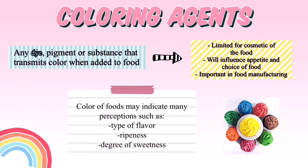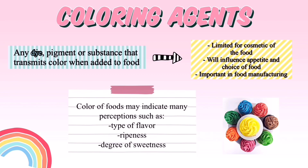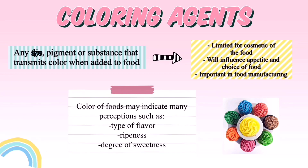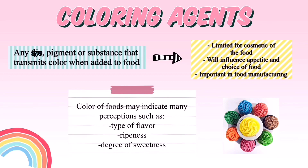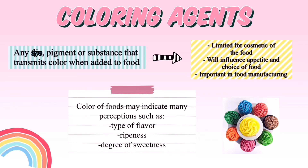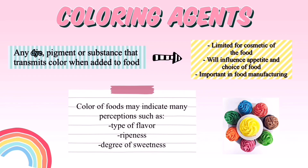Coloring agents are any dye, pigment, or substance that transmits color when added to food. They are used for the cosmetic appearance of food, they influence appetite and choice of food, and they are also important in food manufacturing. The color of foods may indicate many perceptions such as type of flavor, ripeness, and degree of sweetness.